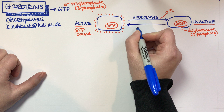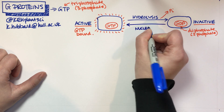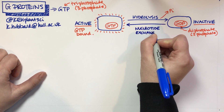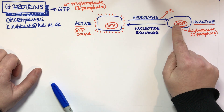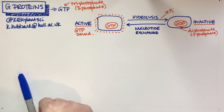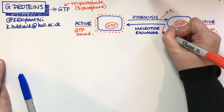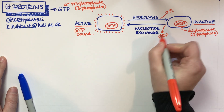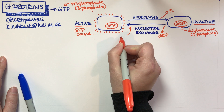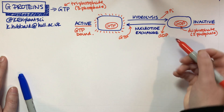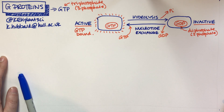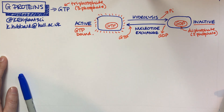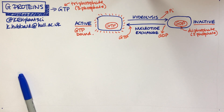To go back in the other direction — to switch the protein on — we need a process of nucleotide exchange. We can't just add the phosphate back onto the GDP. What the protein actually does is chuck off the old GDP entirely, and then add a new molecule of GTP, exchanging it with what's just in the cytosol.